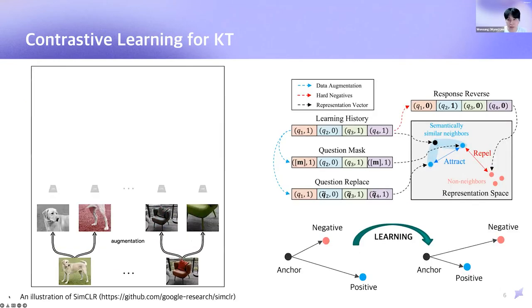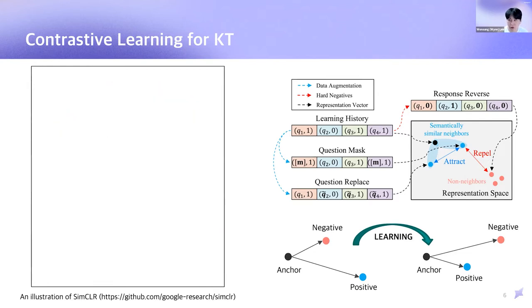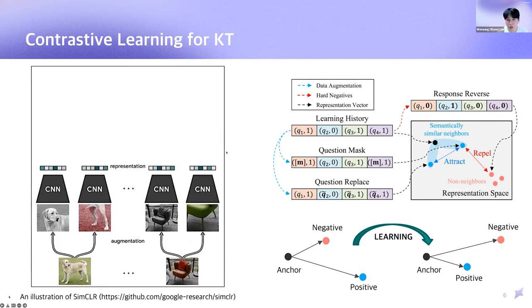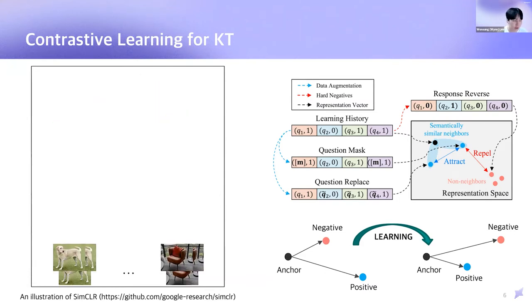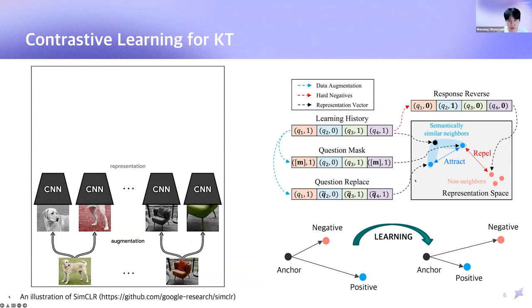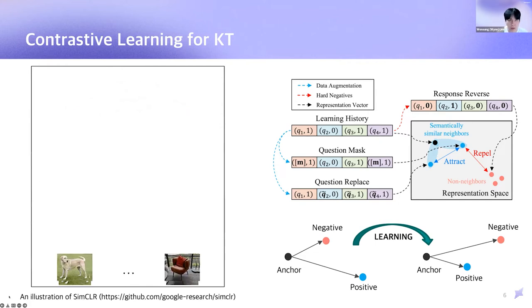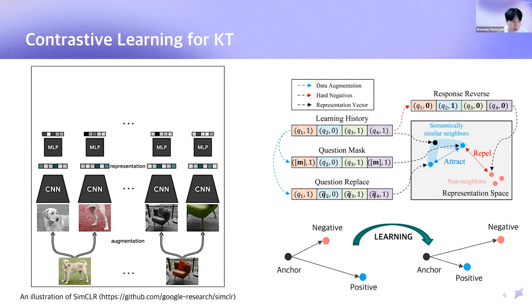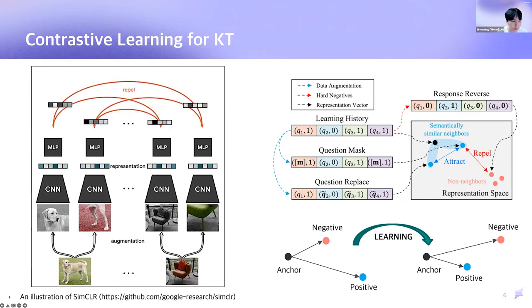So, for a better understanding of the idea of contrastive learning, which is a special branch of self-supervised learning, I will show you a famous illustration of SimCLR. Contrastive learning describes the idea of training models to have high similarity in their representation between positive pairs and inversely for negative pairs using a contrastive loss. In the figure on the right, you can see that we applied this idea to student learning history in order to make useful self-supervised signals and in order to handle data sparsity. We assume that after some proper data augmentation, each student proficiency represented by the augmented learning history is still similar to before.